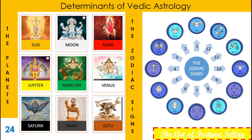There are nine planets. The first one is the Sun. Modern science calls it a star because it can generate its own heat and light, but Vedic Astrology calls it a planet — a Graha — and has given it the place of a king among the nine planets. The next planet is the Moon. We know it is a satellite of Earth, but Vedic Astrology has given it the position next to the Sun, and it is a soft planet.